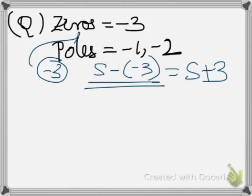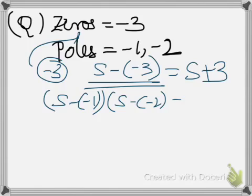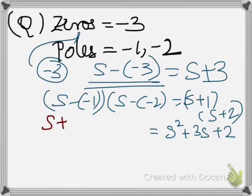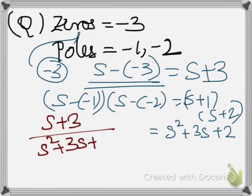Coming to the denominator, it will be s minus (minus 1) into s minus (minus 2), which is (s+1)(s+2). You can simplify and write it as s squared plus 3s plus 2. So on the whole you get the transfer function is (s+3) divided by (s²+3s+2).